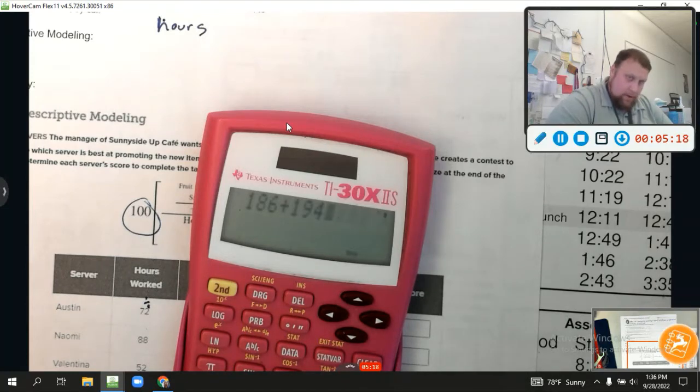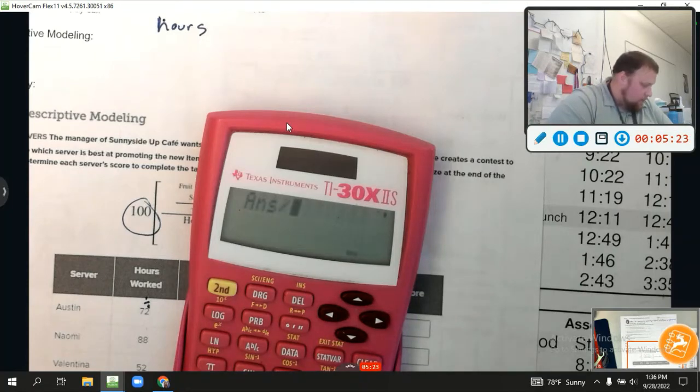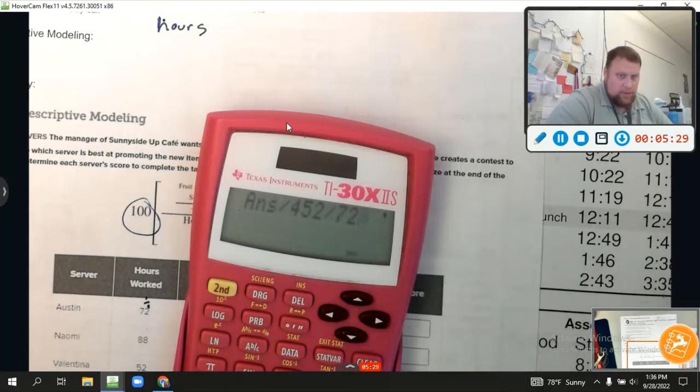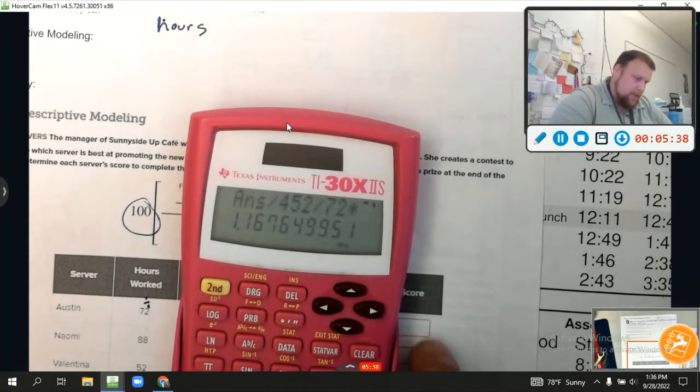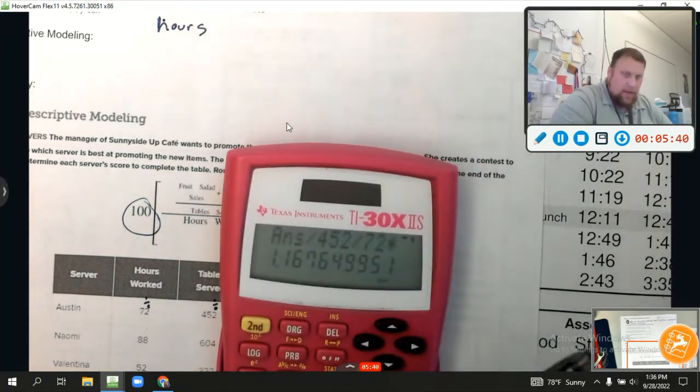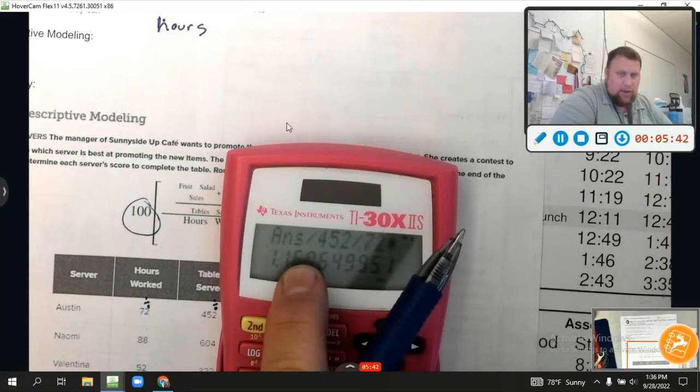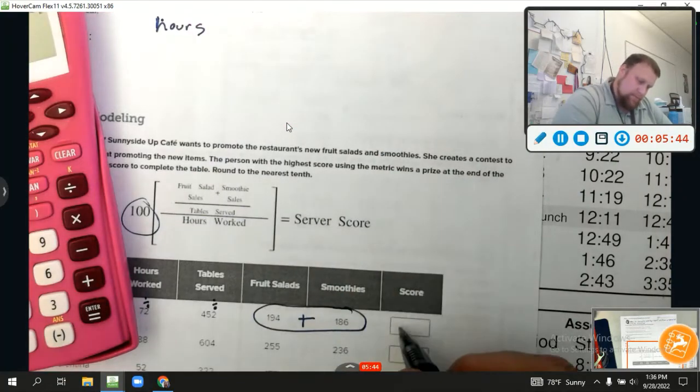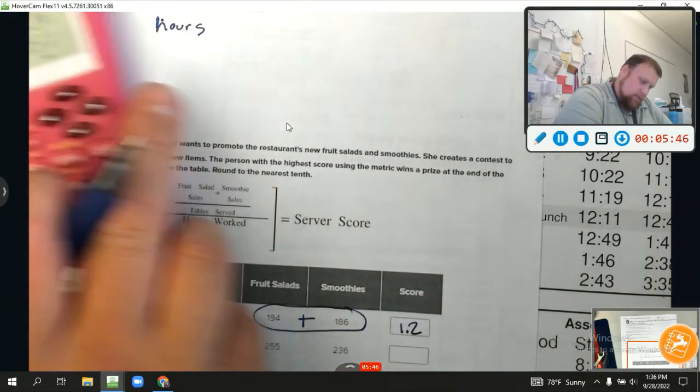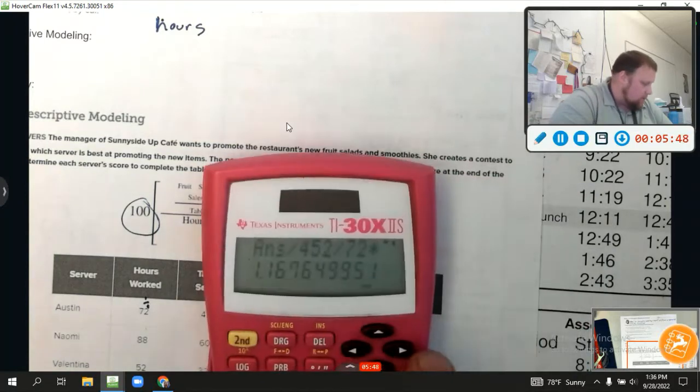Okay, let's go ahead and try Naomi's. Naomi, let's see if we can do this all at once. Parentheses, watch this. 255 fruit salads plus 236 smoothies. We're going to divide that by 604 tables served. That's a lot of tables. And then divide that by 88 hours worked. And then times that whole thing by 100. And her score is rounded to, let's see, the two stays the same, so 0.9.